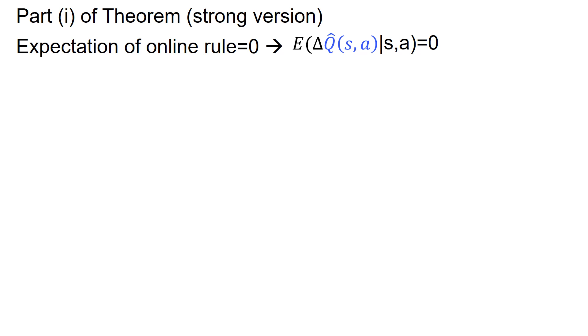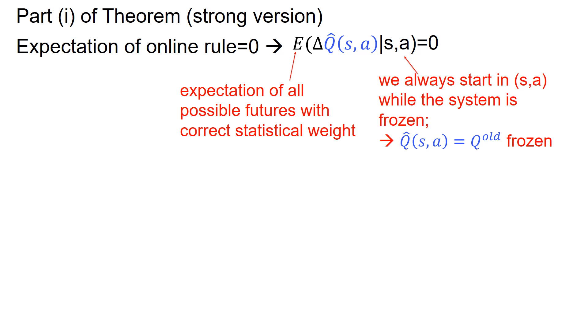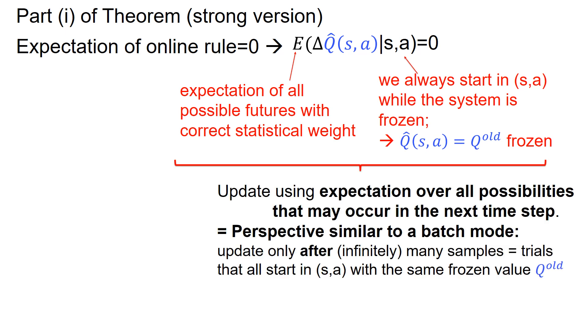So the expectation of an online rule is 0. This is the expectation over all possible futures with correct statistical weight. So next states, next rewards. And we always start in the state s,a while the system is frozen. So Q hat is my old Q value, and it's kept frozen.